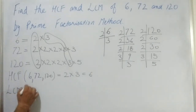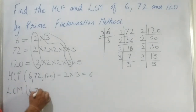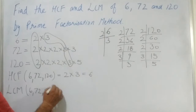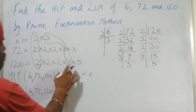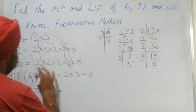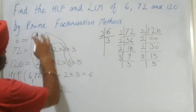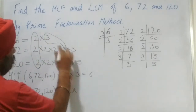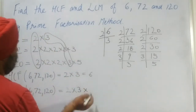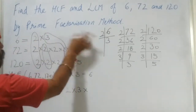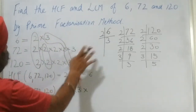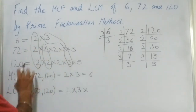Next, we need to find the LCM of 6, 72, and 120. As we know, LCM is the multiplication of the common pairs and the remaining numbers. The common pairs we have are 2 and 3. There is no third common number for all three, so we leave that. Now we find the common factors of 72 and 120.